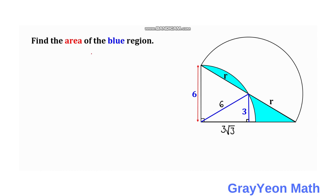Drawing a line from the point of intersection of the quarter circle and the triangle, we again form a 30-60-90 triangle, because that line is also 3√3. The remaining length along the base is 6 minus 3, which is 3, and since the longer leg equals √3 times the shorter leg, this confirms a 30-60-90 triangle, so the hypotenuse of this smaller triangle is 6 units.